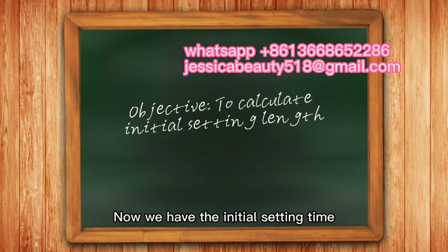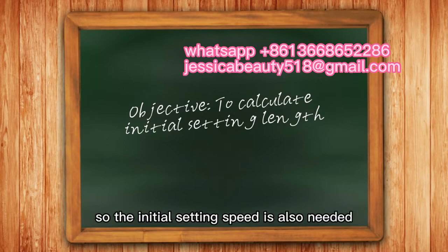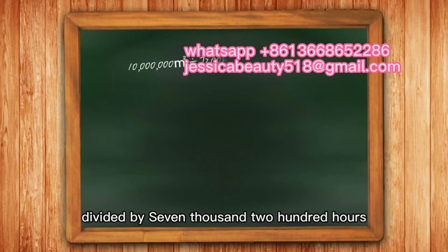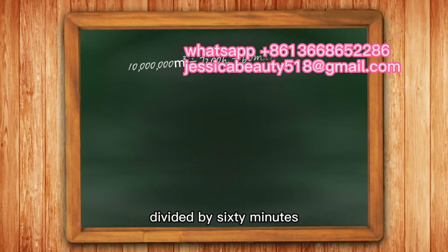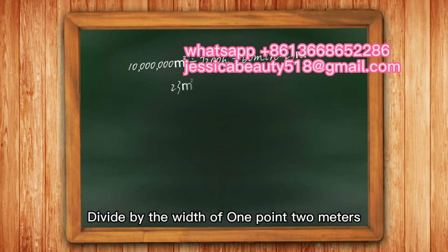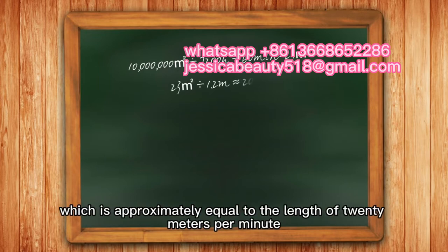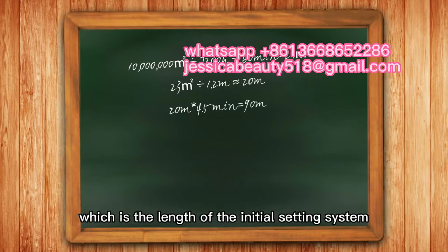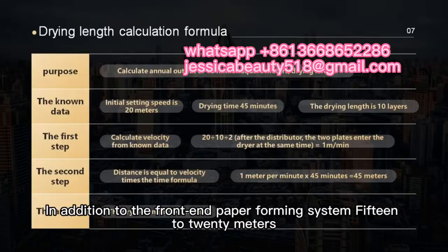To find the initial setting speed: the annual output of 10 million square meters divided by the annual operating minutes gives approximately 23 square meters per minute. Dividing by the board width of 1.2 meters gives approximately 20 meters per minute — this is the line speed. Multiplying 20 meters per minute by the 4.5-minute initial setting time equals 90 meters, which is the length of the initial setting system.